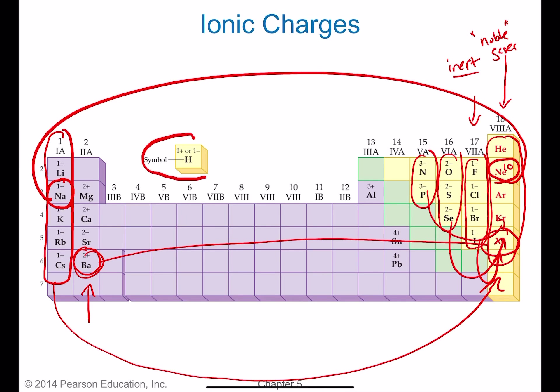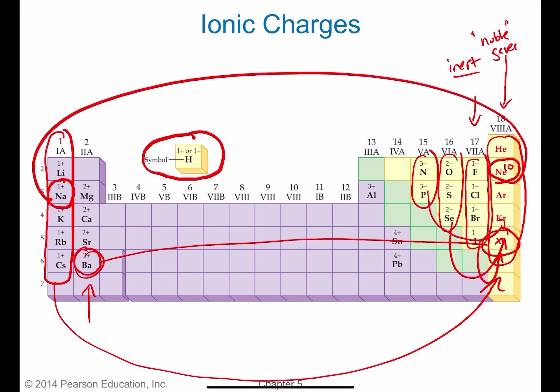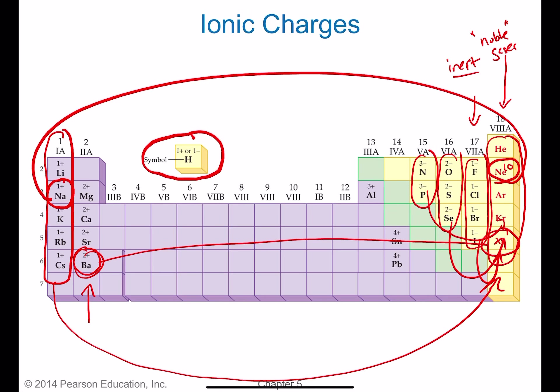Hydrogen is special. It has a single valence electron and most often wants to lose it, but it is possible for hydrogen to gain an electron in special circumstances, such as in organic or inorganic chemistry. If hydrogen gained one electron, it would be just like helium, again achieving a noble gas configuration.